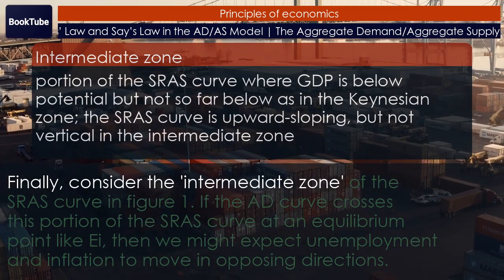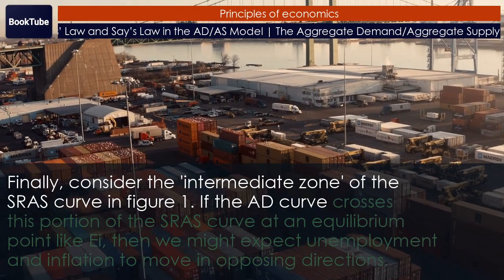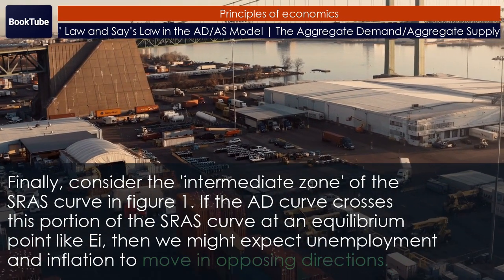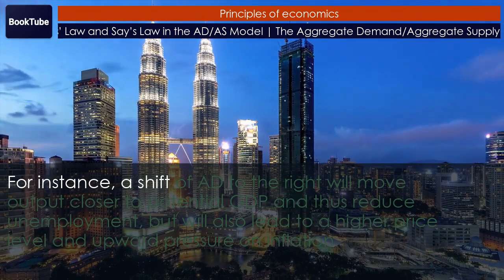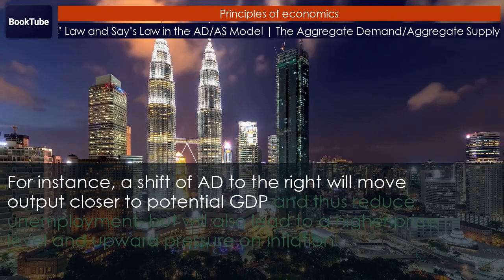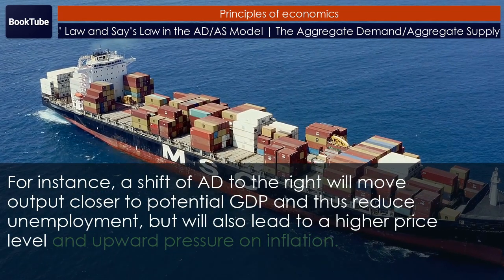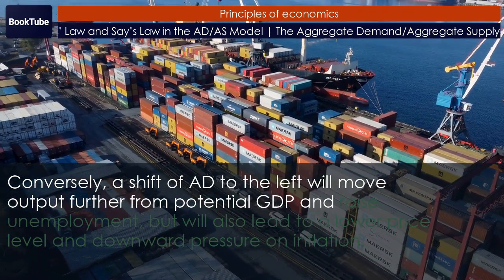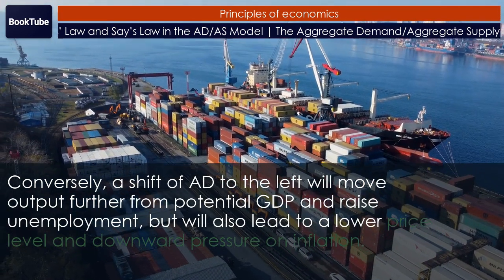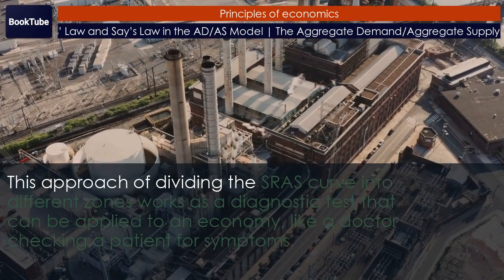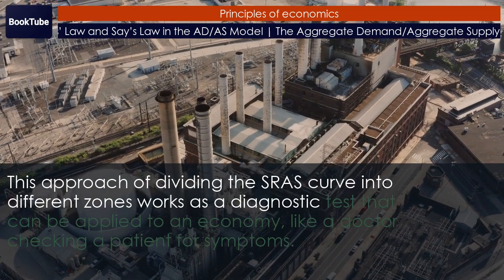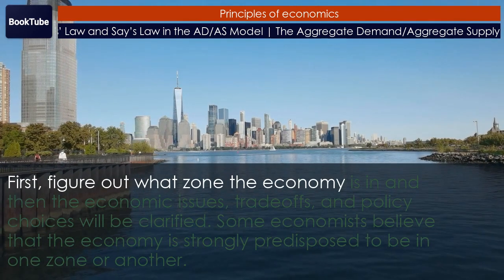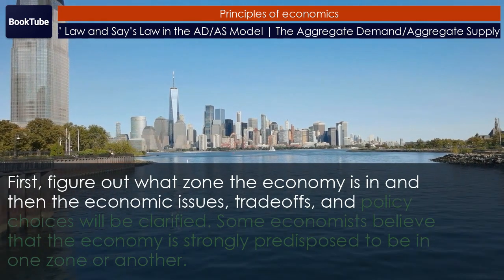Finally, consider the Intermediate Zone of the SRAS curve in Figure 1. If the AD curve crosses this portion at an equilibrium point like A, then we might expect unemployment and inflation to move in opposing directions. For instance, a shift of AD to the right will move output closer to potential GDP and thus reduce unemployment, but will also lead to a higher price level and upward pressure on inflation. Conversely, a shift of AD to the left will move output further from potential GDP and raise unemployment, but will also lead to a lower price level and downward pressure on inflation. This approach of dividing the SRAS curve into different zones works as a diagnostic test that can be applied to an economy, like a doctor checking a patient for symptoms. First, figure out what zone the economy is in, and then the economic issues, trade-offs, and policy choices will be clarified.